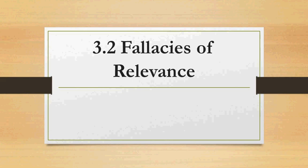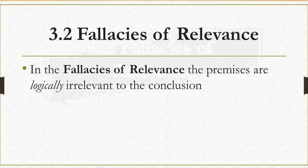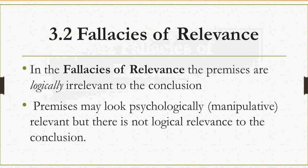Hello and welcome to this video on section 3.2, The Fallacies of Relevance. In this video I'm going to cover the first eight fallacies of relevance. Basically what happens in the fallacies of relevance is that the premises are logically irrelevant to the conclusion. The premises may look psychologically relevant — there may be some manipulation, misuse of language, manipulative language used to try to prove a conclusion, but there is no logical relevance between the premises and the conclusion. Remember that fallacies are mistakes in reasoning, and with informal fallacies we have to look at the content and the language being used. If there is language that is threatening or that appeals to people, then that is logically irrelevant to the conclusion.